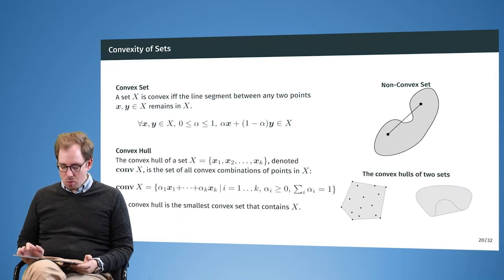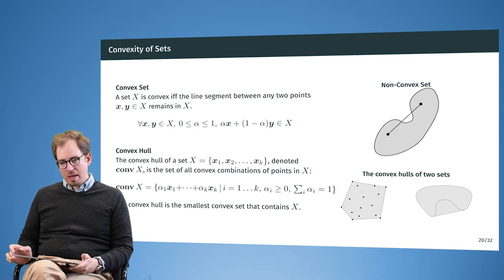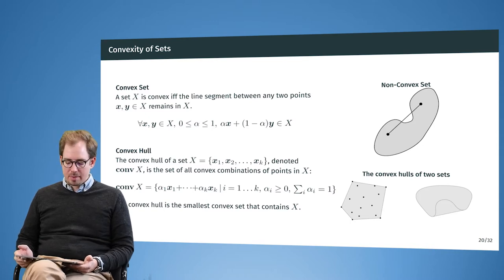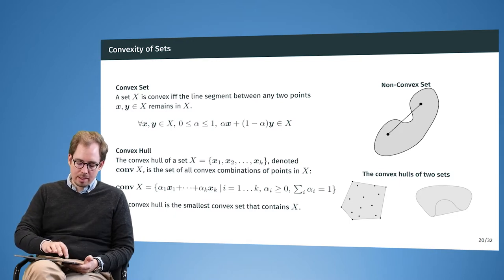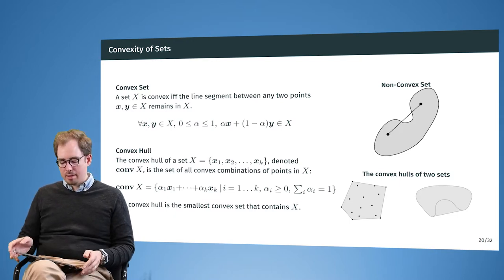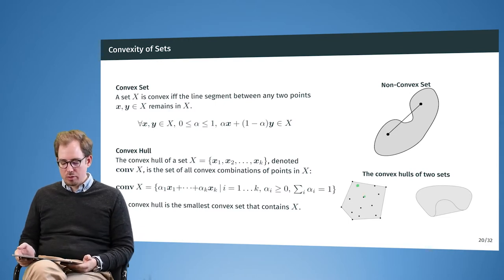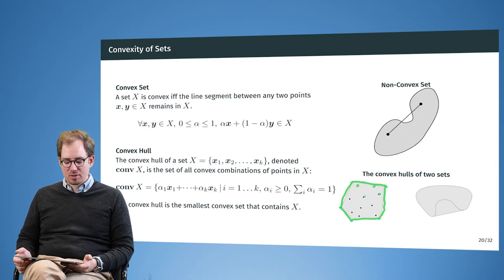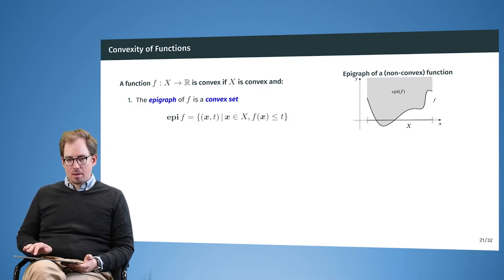Given a set, we can construct the convex hull, which means we take the combination of all points that lie within or between points originally contained in the set. Here we have all these small black dots, and we take the convex hull around them. This is the smallest convex set that contains all the original points.